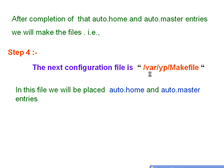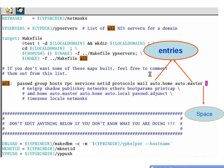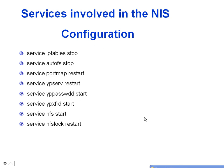After completing the auto.home and auto.master entries, we will make the files. Step number five: the next configuration file is /var/yp/Makefile. In this file we will place the auto.home and auto.master entries. The services involved in NIS configuration are: service iptables stop, service autofs stop, service portmap restart, service ypserv restart, service yppasswd start, service nfs start, and service nfslock restart.